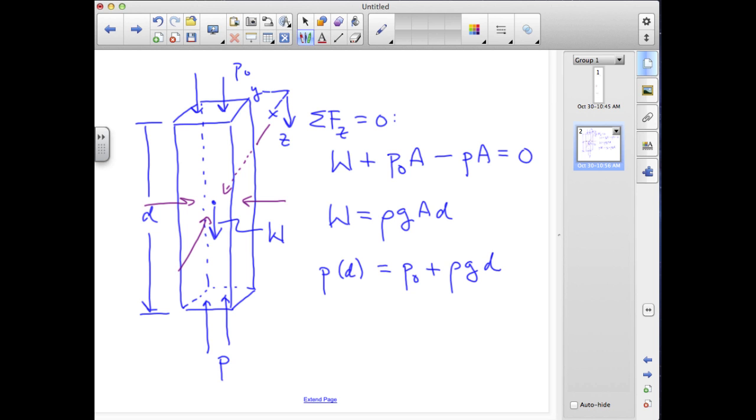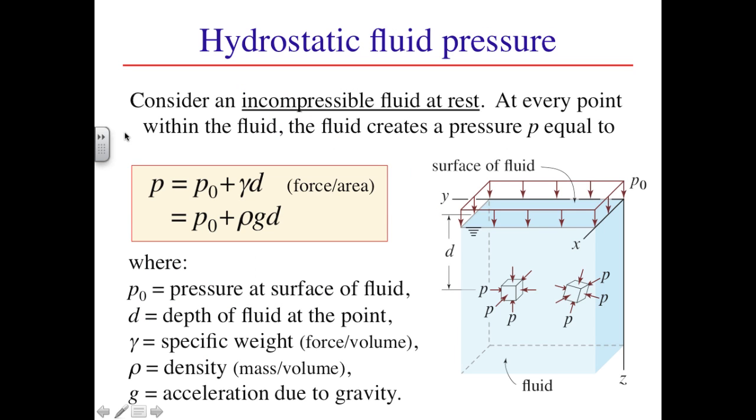That is, we have pressure as a function of depth, which is just a linear function. There are several points to make about this expression. The pressure at the surface of the fluid is a reference pressure p0. At atmospheric temperature and altitude near sea level, p0 is ambient air pressure and is about 14.7 pounds per square inch.